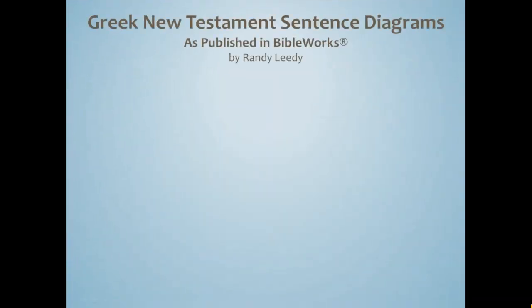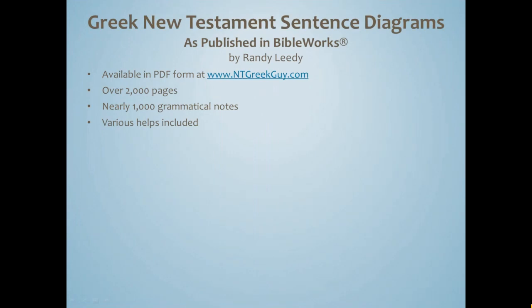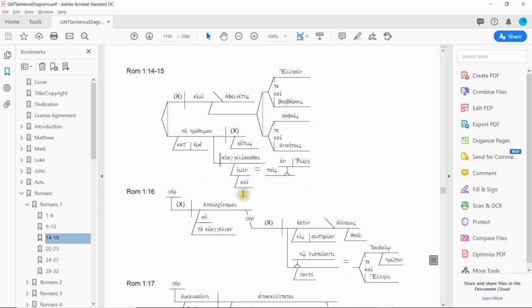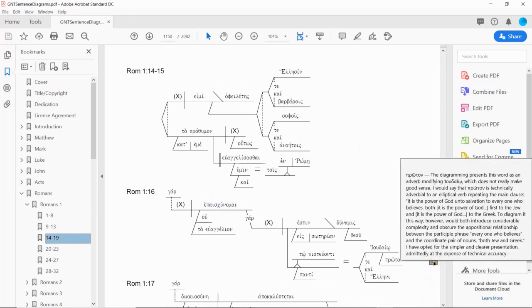The sentence diagrams that were published in BibleWorks are now available in PDF form. Here are the prices. And let me show you what this PDF looks like. Here's the cover. Let's just open to Romans 1:16. So I'm clicking on Romans chapter 1. Verse 16 is in this range. I am not ashamed of the gospel of Christ. Notice the grammatical note indicated in the right margin. As you pass your mouse over that icon, you'll be able to see the text of the note.